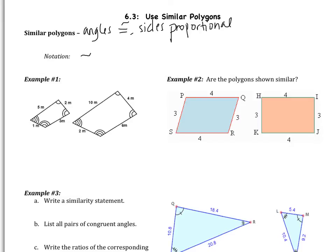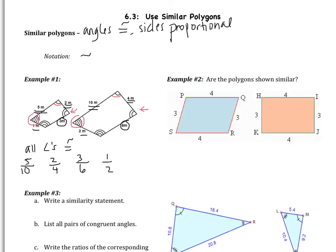In example 1, you'll see two polygons that are similar. All the angles are congruent — this angle is congruent to this one, this one to that one, and so on for all four pairs. The sides are also proportional: side 5 corresponds to 10, side 2 corresponds to 4, side 3 corresponds to 6, and side 1 corresponds to 2. So 5/10 = 1/2, 2/4 = 1/2, 3/6 = 1/2, and 1/2 = 1/2 — they all have the same ratio, showing the sides are proportional.